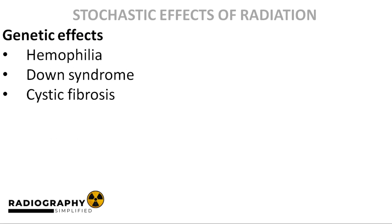Now we highlight stochastic effects. A good starting point would be the genetic effects that we just spoke about. Examples of genetic effects that can occur as a result of radiation exposure include genetic disorders such as hemophilia, Down syndrome, and cystic fibrosis. Remember, genetic effects are not expressed in the exposed individual — they may stay hidden for generations.